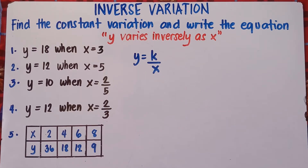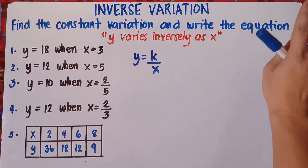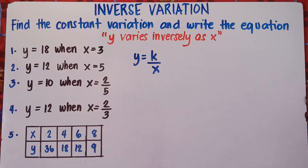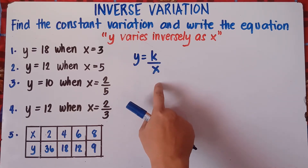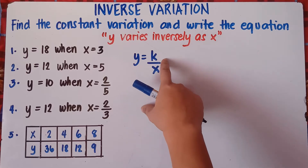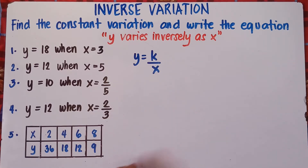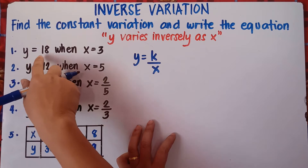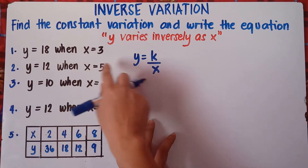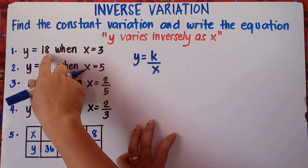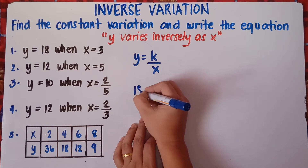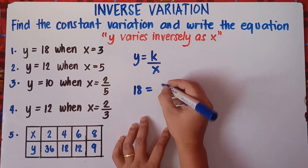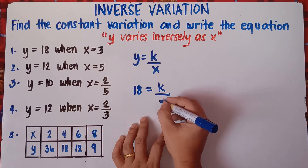To get k, we have two solutions. First solution: we can just simply substitute the value of y and x to get the value of k. So for number one, if our y is 18 and our x is 3, just simply substitute these values. So our equation is 18 equals k over 3.